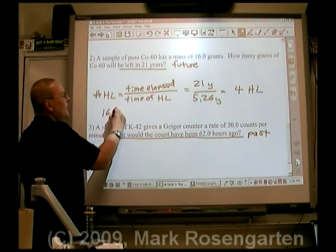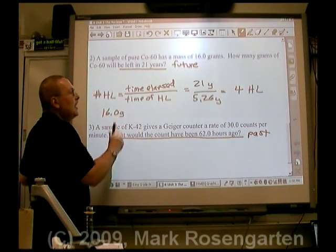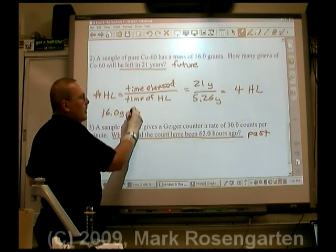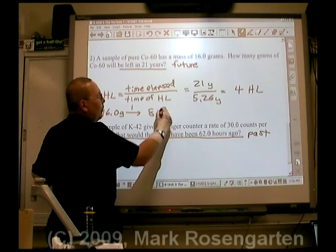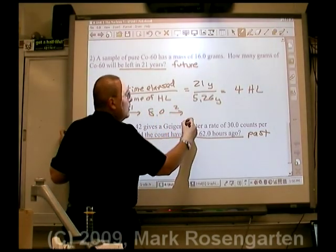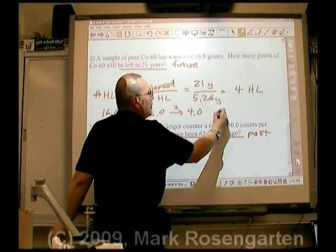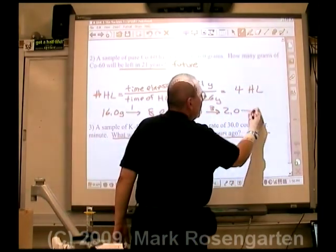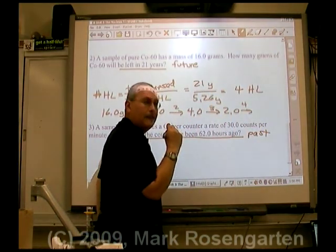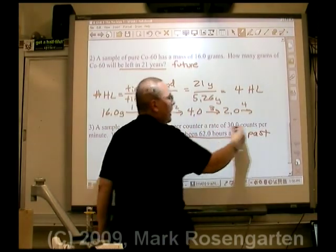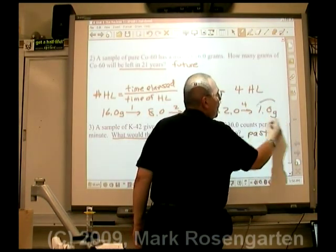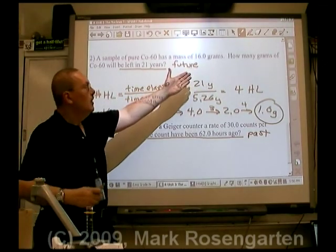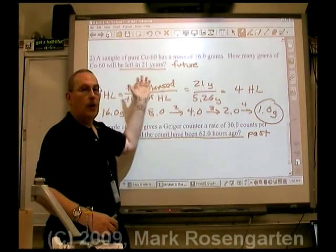We've got 16.0 grams now, and it's going to undergo four half-lives, so we cut it in half four times. First half-life: 8.0 grams. Second: 4.0. Third: 2.0. Fourth half-life: 1.0 gram remaining. So after 21 years, only 1 gram of cobalt-60 is left.